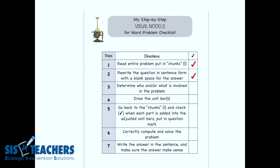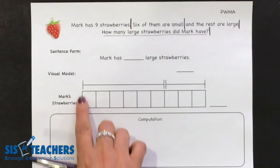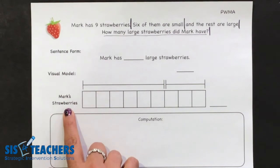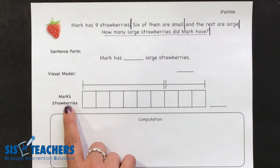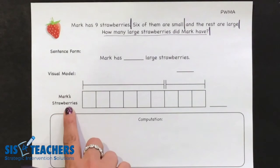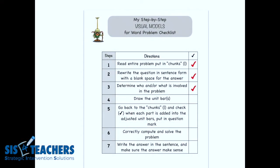Step three asks us to determine the who and/or what is involved in the problem. We're going to look at the characters in the story and what's really happening. On our mat, this is already scaffolded for first graders and I've labeled it as 'Mark's strawberries' — so that's our who and our what. As first grade continues, you might leave parts blank and eventually students will fill in the who or the what themselves. We can go ahead and check that off on our checklist.